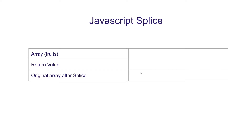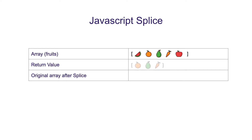Now we will talk about the splice function. Similar to slice, splice can be used to fetch a subarray with a little variation. For example, if we have an array with 5 fruits and we want the fruits from index 1 to index 4, the splice function will give us the required array. But the important point to notice is that it will delete the returned elements from the original array.